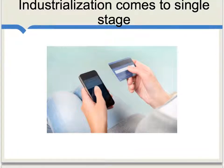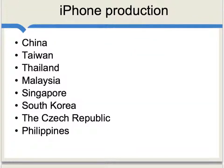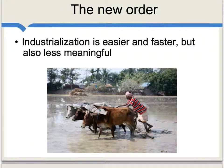For instance, imagine a country producing just one part of a smartphone. If we look at iPhone production, it's not centered in a single country, but rather different components are produced around the world, including an extensive list of countries. In this new order, perhaps industrialization — or rather partial industrialization — is easier and faster, because you're just getting a single sector up to speed with information brought in elsewhere. But at the same time, that new industrialization is also less meaningful for the country as a whole.